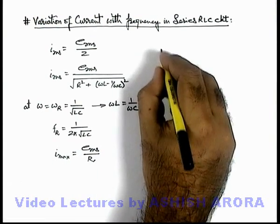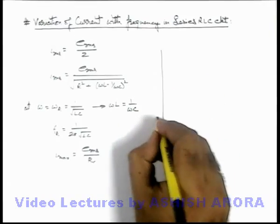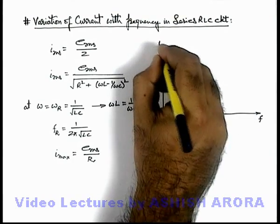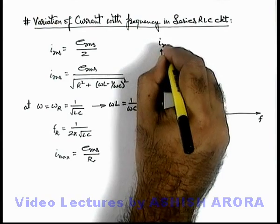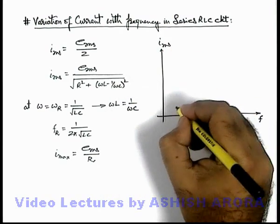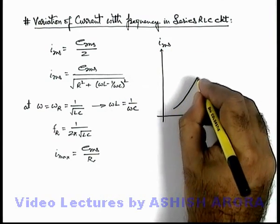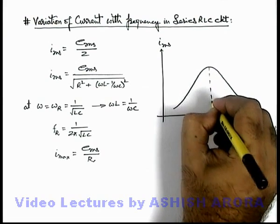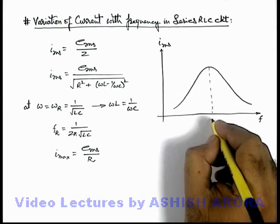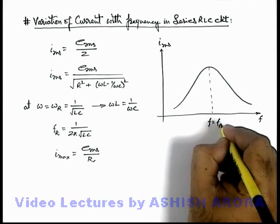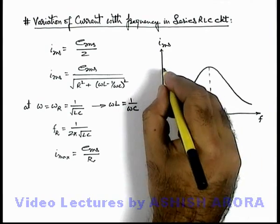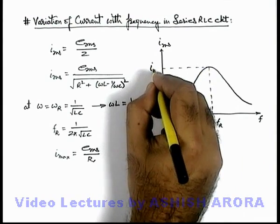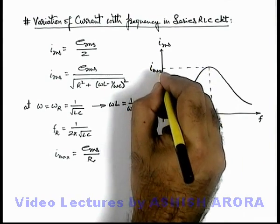If we plot the variation of RMS current with frequency in the series RLC circuit, the curve has a characteristic peak shape, where the value of current is maximum at the resonant frequency f_r. This is the state where current reaches its maximum value.